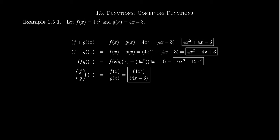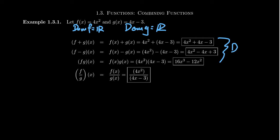We also need to talk about domains. The domain of f(x) = 4x² is all real numbers — there's no restriction on multiplication or squaring. The domain of g is likewise all real numbers, since there's no restriction on multiplication or subtraction. As a consequence, the domain of f+g, f-g, and f×g is just the intersection of the domains of f and g — since both have no restrictions, those domains are all real numbers as well.